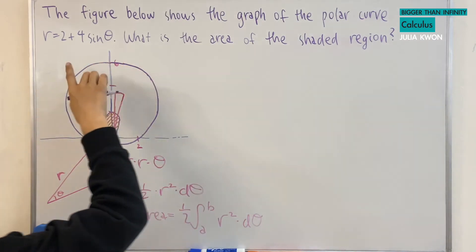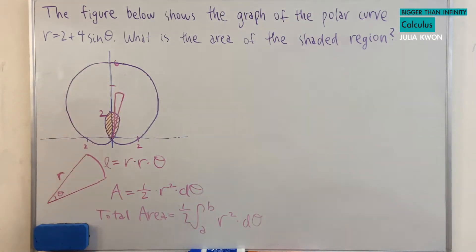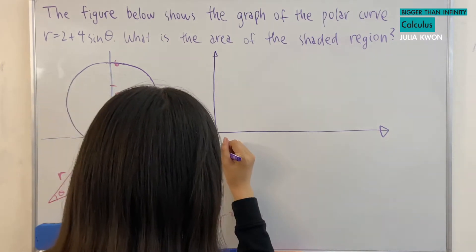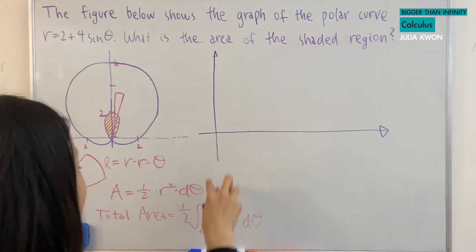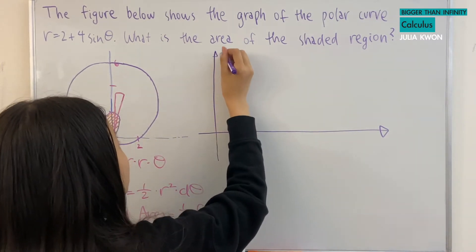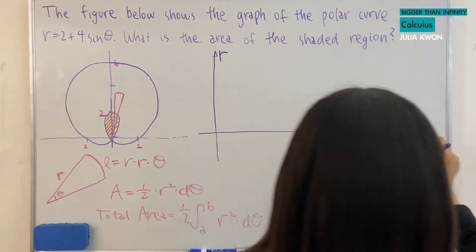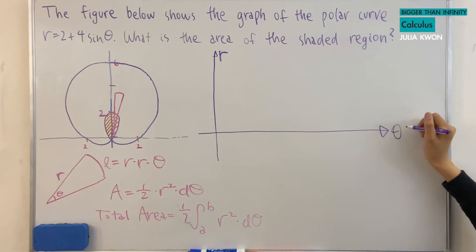And the way to find that is, well, first I'm going to draw r equals 2 plus 4 times sine theta by treating it as x and y values. So the y axis will represent r, the radius, and the x axis will represent theta.